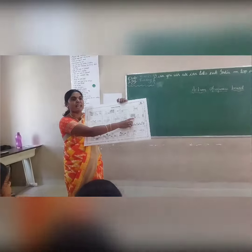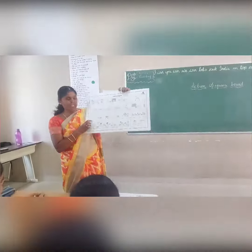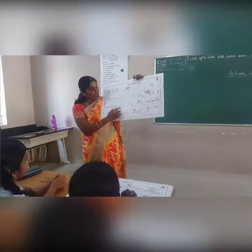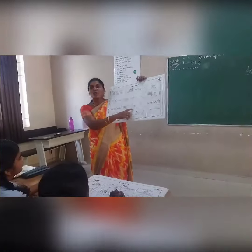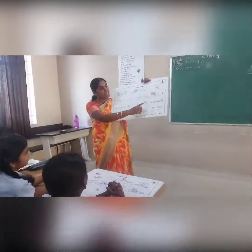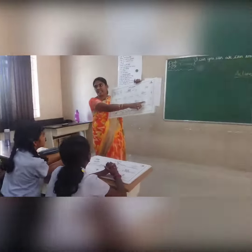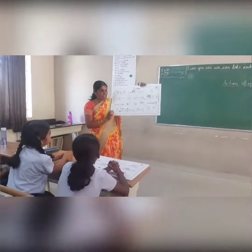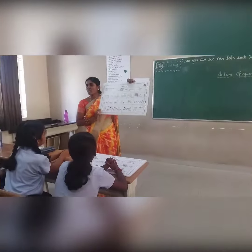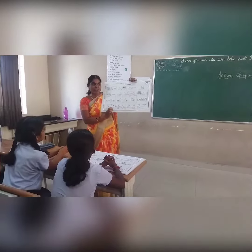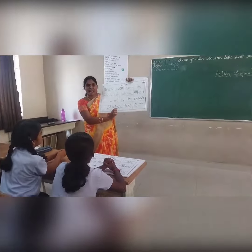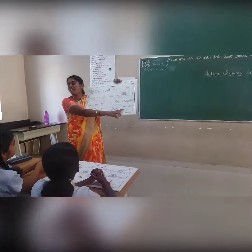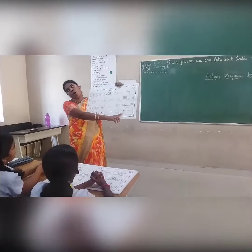Then he moves towards the dairy trolley. Then he takes a dozen of eggs and puts it in the trolley. He moves to the counter. Then he sees a long queue. He stands at the last. When his turn comes, he checks and bills every product. He gives the cash and checks whether the products are given properly. Then he happily moves to his home.